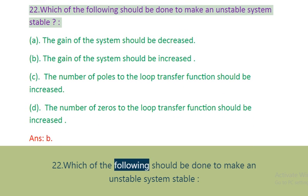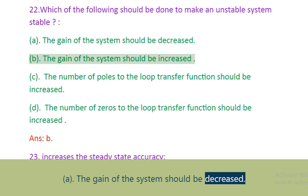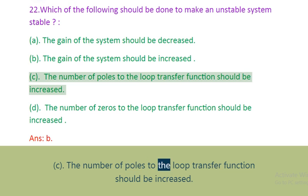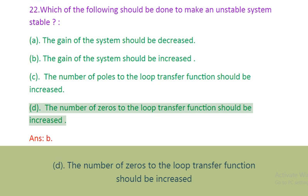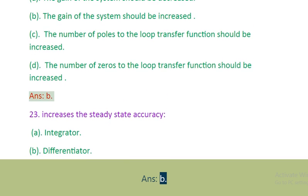Question 22: Which of the following should be done to make an unstable system stable? A. The gain of the system should be decreased. B. The gain of the system should be increased. C. The number of poles to the loop transfer function should be increased. D. The number of zeros to the loop transfer function should be increased. Answer: B.